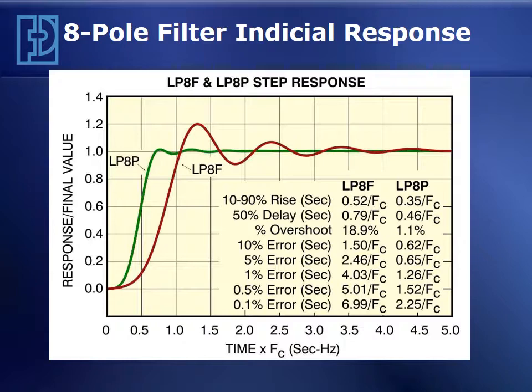Why does the LP8F have such poor overshoot? It is a direct result of how abruptly we truncate the Fourier series of the unit step function. The pulse mode filter with its broadly rounded response gently truncates that Fourier series and results in very little overshoot. When you abruptly truncate the Fourier series, that results in something known as Gibbs phenomenon or Gibbs peak, and that is the reason for the approximately 20% overshoot we see in the step function.